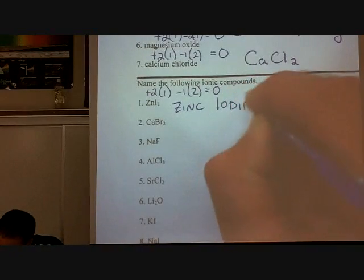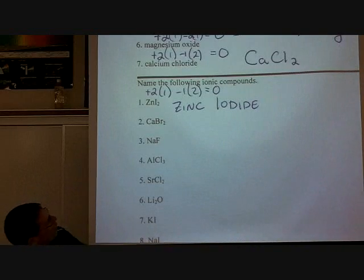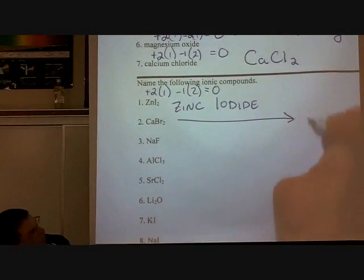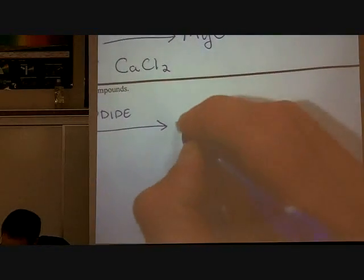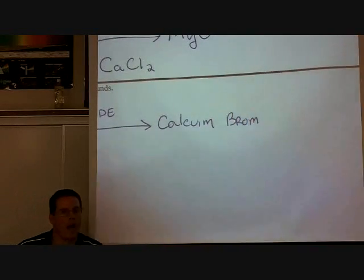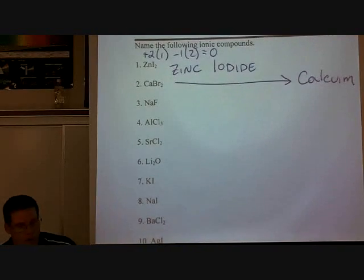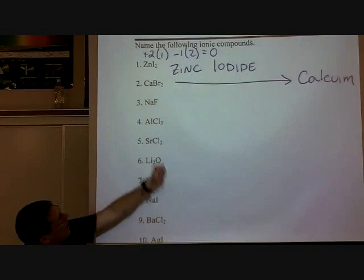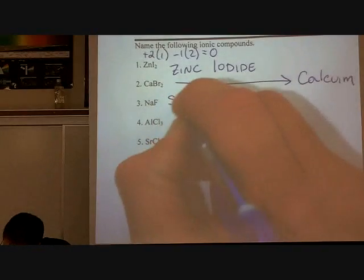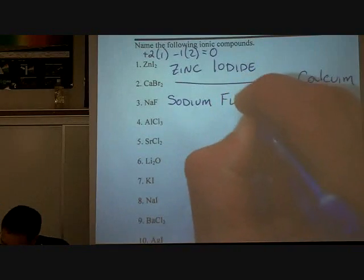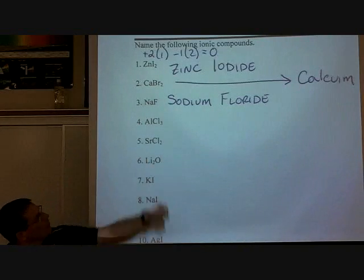For the next example, CaBr₂: Ca is calcium, and Br is bromine — so the name is calcium bromide, dropping '-ine' and adding '-ide.' We don't need to worry about the charges when going from formula to name since they're already balanced. Next, NaF: Na is sodium, and F is fluorine, so the name is sodium fluoride — that's the compound in your toothpaste.